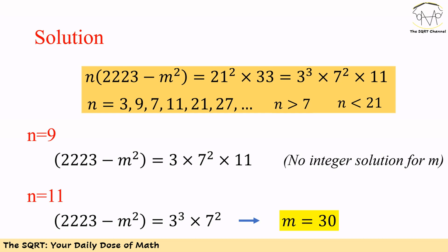So let's move on to the next possible value for N, which is 11. If we use 11 for N, then 2223 minus M² is going to be 3³ times 7². If you solve this equation, we can find M as 30, and that's our solution. So N is equal to 11 and M is equal to 30.